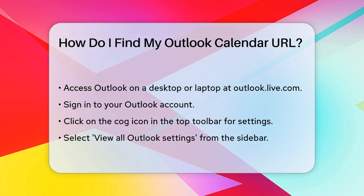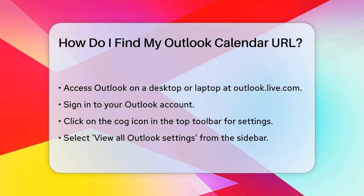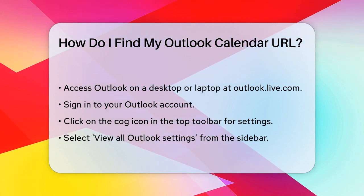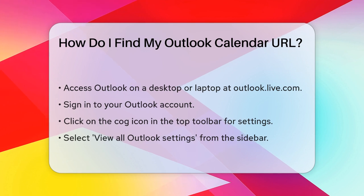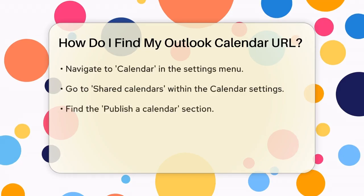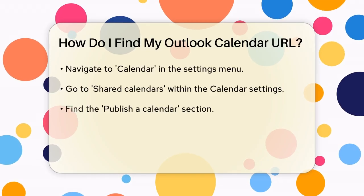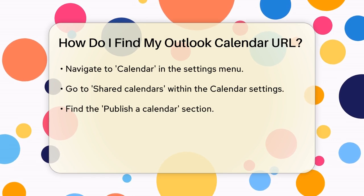Once you're logged in, look at the top toolbar and click on the cog icon, which represents the settings. In the right-hand sidebar, you'll see an option that says View All Outlook Settings at the bottom. Click on this.